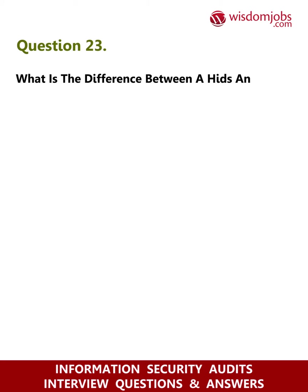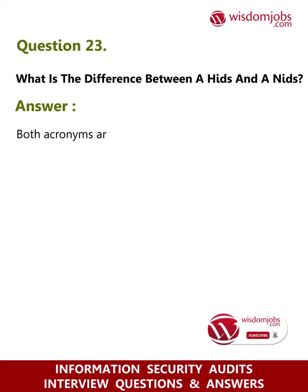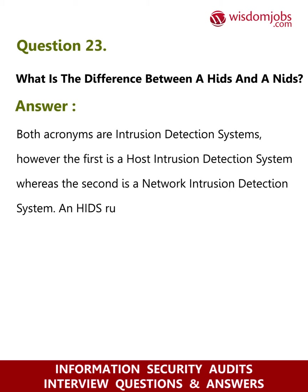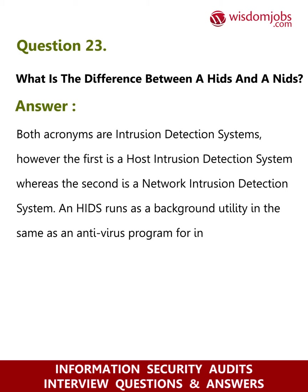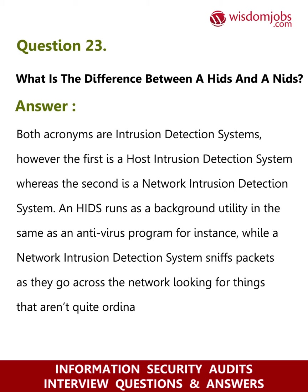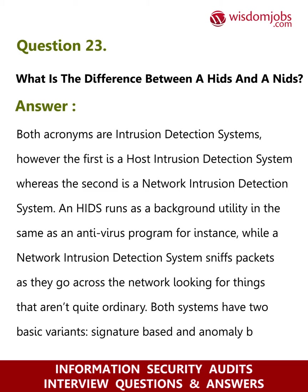Question 23: What is the difference between a HIDS and an IDS? Answer: Both acronyms are intrusion detection systems. However, the first is a Host Intrusion Detection System, whereas the second is a Network Intrusion Detection System. A HIDS runs as a background utility in the same way as an antivirus program, while a Network Intrusion Detection System sniffs packets as they go across the network, looking for things that aren't quite ordinary.